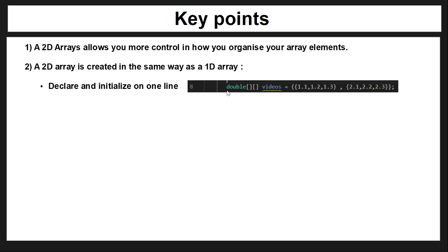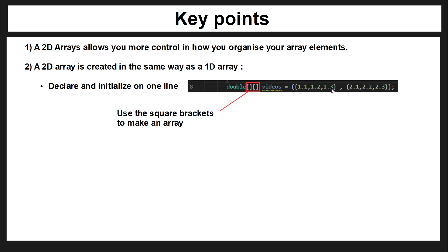Here we're going to use double data type values. One of the biggest differences is that instead of having one set of brackets we have two brackets, and this tells the computer it's going to be a 2D array. We still have the variable name we use to reference our array. Then we have the outer curly brackets, and within those we have secondary sets of brackets. So the values 1.1, 1.2, 1.3 form our first inner array, and 2.1, 2.2, 2.3 form our second inner array.